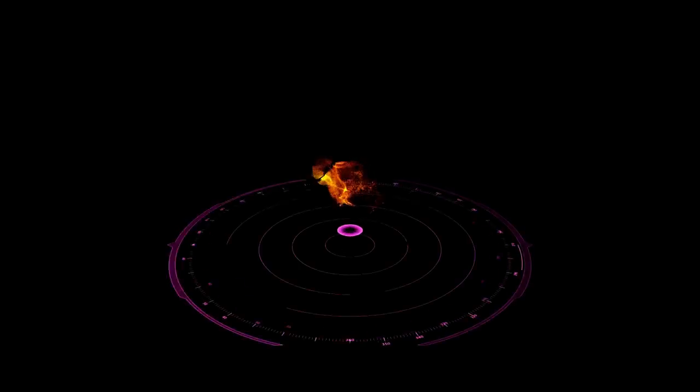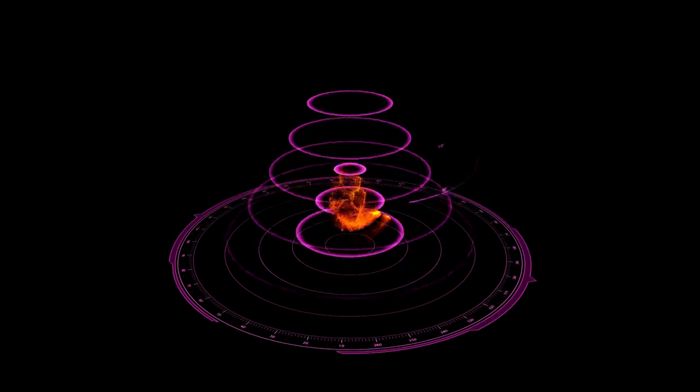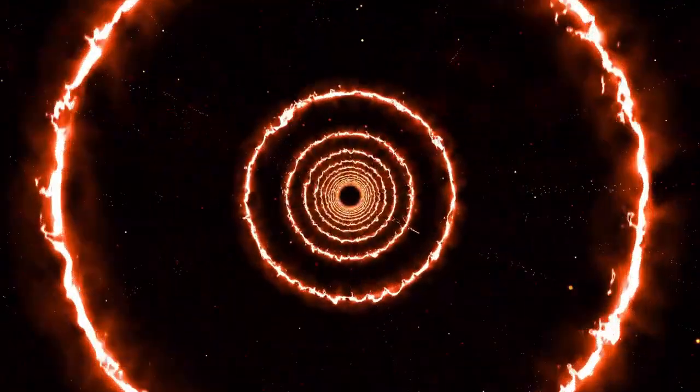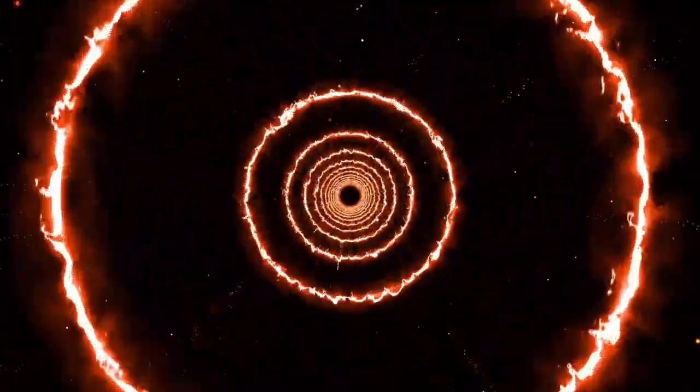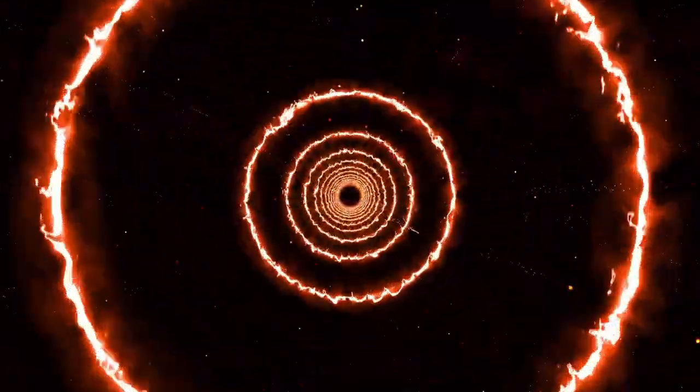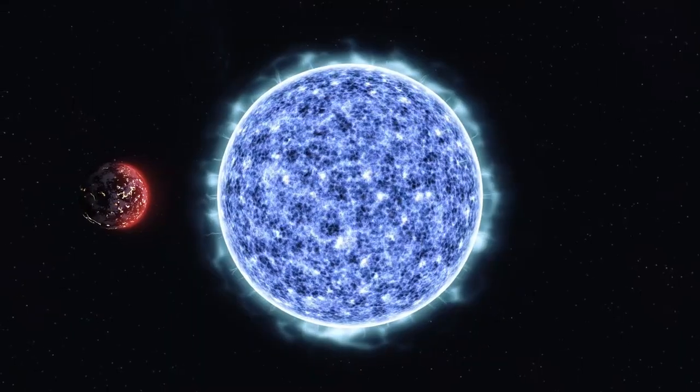In time, Betelgeuse will fade from Orion's shoulder. The brilliant red point we've known for millennia will be gone. In its place will be a swirling nebula, rich with dust, gas, and elemental debris. But the loss is not the end. It is the beginning of something new.